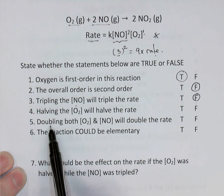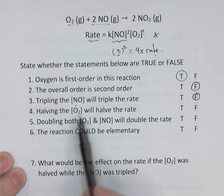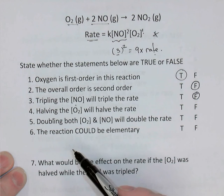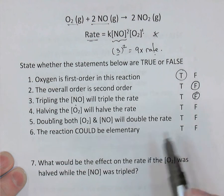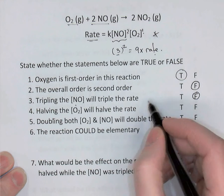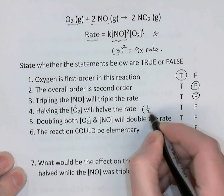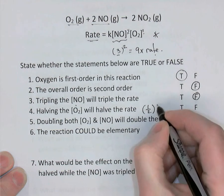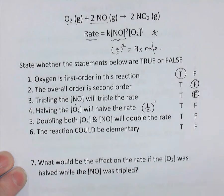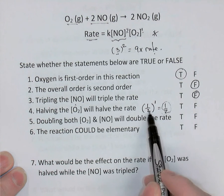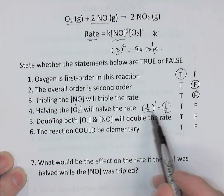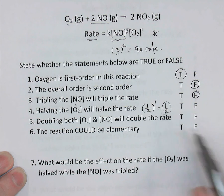By that logic, try number 4: if you were to halve the oxygen concentration — multiply oxygen's concentration by one-half — would the rate also be halved? Oxygen's order is 1, so we take the effect of halving and raise it to the power of 1, giving one-half. So yes, it's true that multiplying oxygen's concentration by one-half would also multiply the rate by one-half.